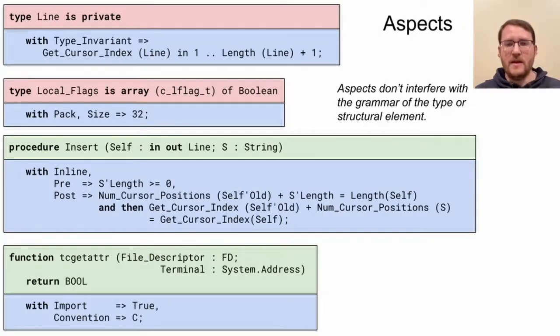Aspects allow you to attach additional metadata, options, and descriptions to types and structural elements without disturbing the main syntax. Looking here, you can see the line in type enforces an invariant. Local flags is a packed array of booleans of 32 bits, which is a fancy way of saying to use a 32-bit integer as the underlying type. This was done to provide a nicer interface to set binary flags and then pass this value off to termios. Insert here will be inlined, but also has a precondition which gets checked prior to being called, and a post condition checked afterwards. You can see the attribute tick old here being used, which is the associated value prior to the procedure call. tc get attr is just a C function being imported and can be used just like a normal ADA function in code.